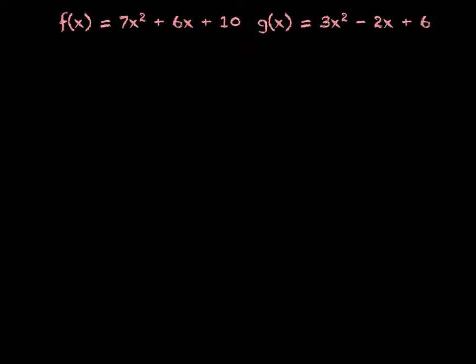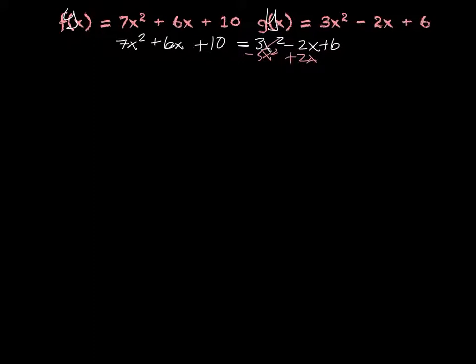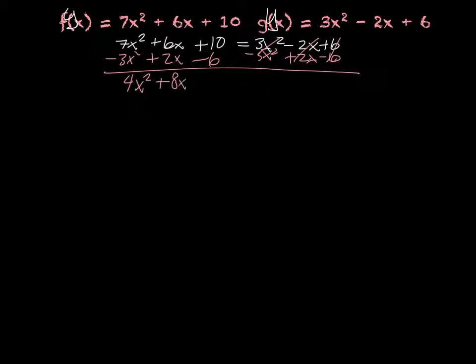For the next example, the same process applies. f(x) = 7x² + 6x + 10 and g(x) = 3x² − 2x + 6. Set them equal to each other: 7x² + 6x + 10 = 3x² − 2x + 6. Combining like terms — subtract 3x², add 2x, subtract 6 — gives 4x² + 8x + 4 = 0.